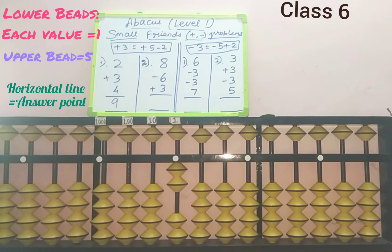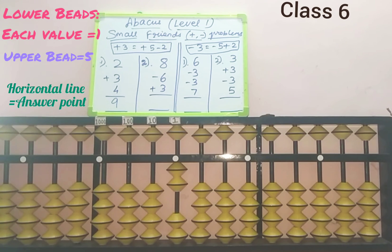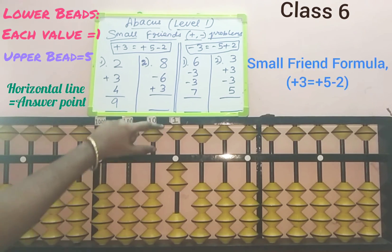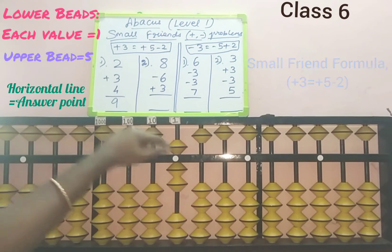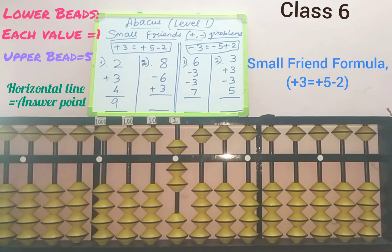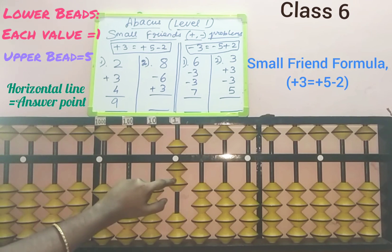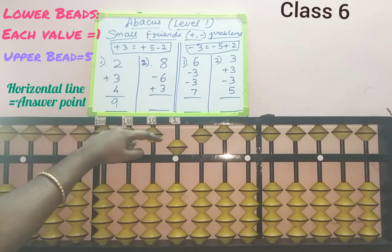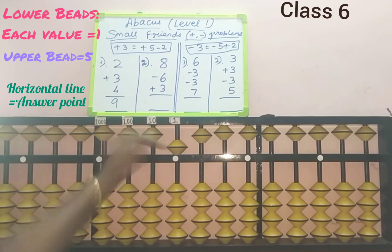Next, third row: add 3 in the ones slot. Here only 2 beads are available, so we cannot add 3 directly. Now we use the formula for adding 3. Three is less than 5, and the question has a plus symbol, so check whether we can do plus 5. Five beads are available, so add 5. Three's friend is 2, and the friend should be in minus, so minus 2. Plus 5 minus 2 is the small friend formula for plus 3 — 3 is added. Count the answer: only 5 beads touch the answer point, so 5 is the answer for the second sum.